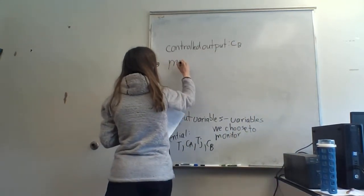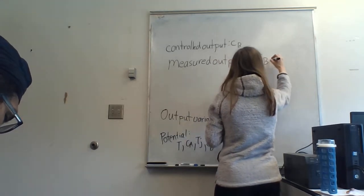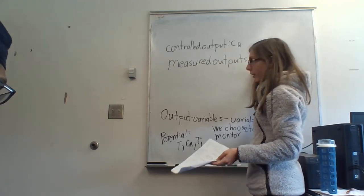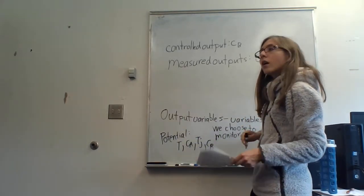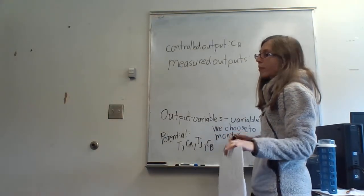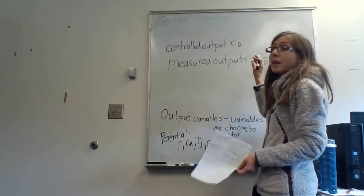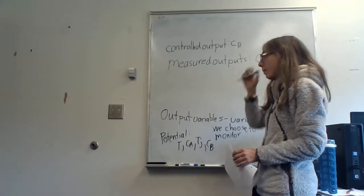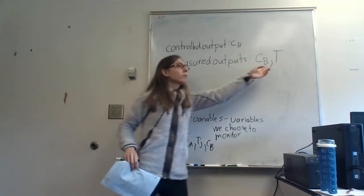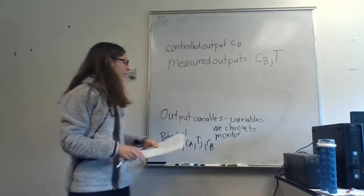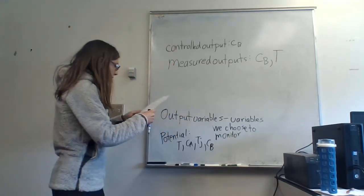With single input, single output, we use one input to try to adjust one variable to get it to that set point. We can also have measured outputs — maybe I'm monitoring temperature not to control it, but just to make sure it's not getting too hot for the material. I don't really care what the temperature is as long as CB is at its set point. And I don't care at all what CA is as long as CB is being made, so I don't even monitor it.